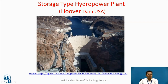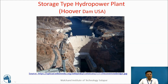This is a well-known storage type hydro power plant from USA — the hydro power plant with Hoover Dam. This is Hoover Dam, with a very big storage reservoir formed on the upstream side. It utilizes a very big head available, and this is the hydro power generation station at the foot of the dam. In the season of high flows, the reservoir is filled and water is used over the year for hydro power generation. This is the specialty of storage type hydro power plants.